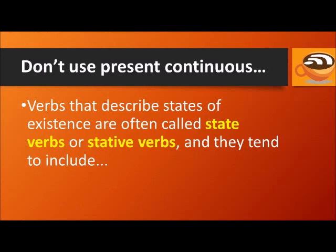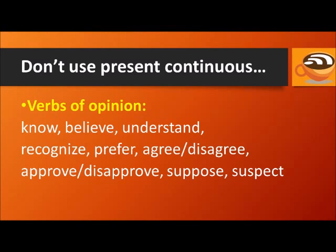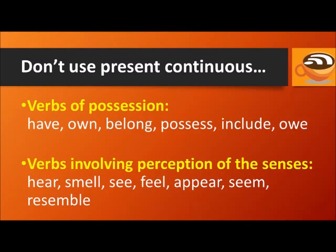Verbs that describe states of existence rather than actions are often called state verbs or stative verbs. They tend to include verbs of opinion, like know, believe, understand, recognize, prefer, agree and disagree, approve and disapprove, suppose and suspect. Also verbs of possession, like have, own, belong, possess, include, and owe.